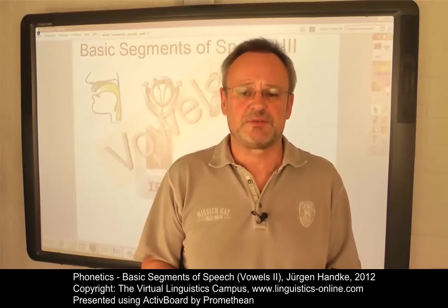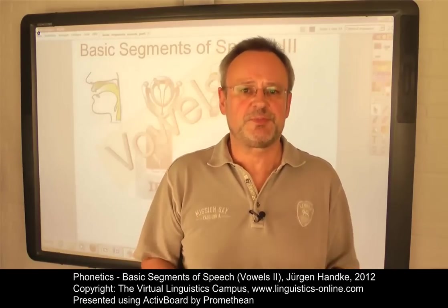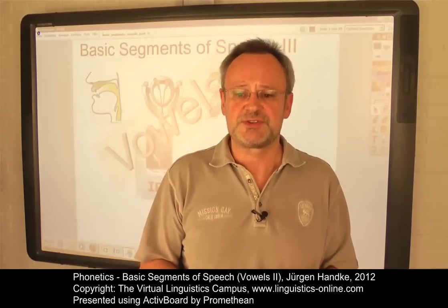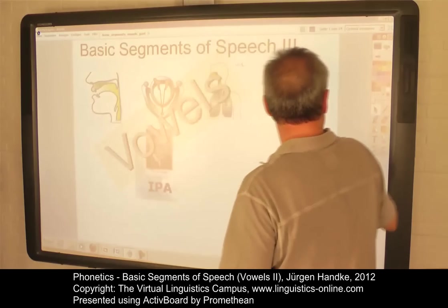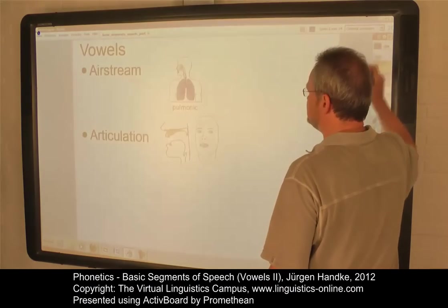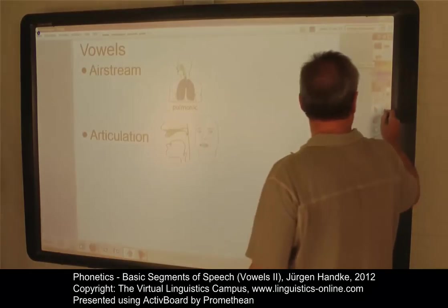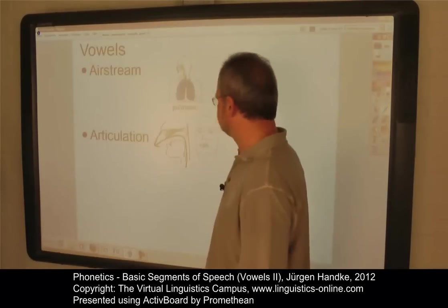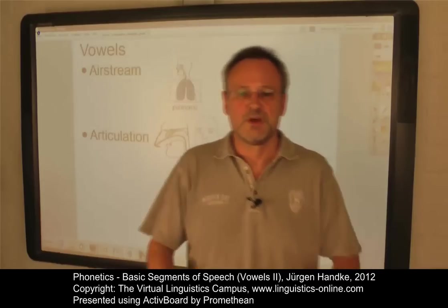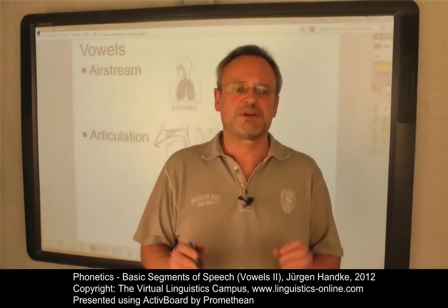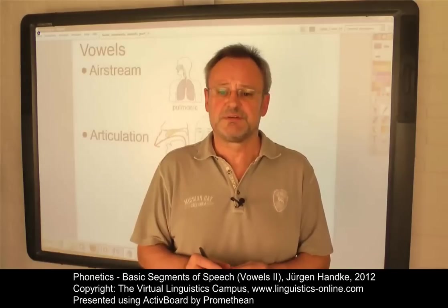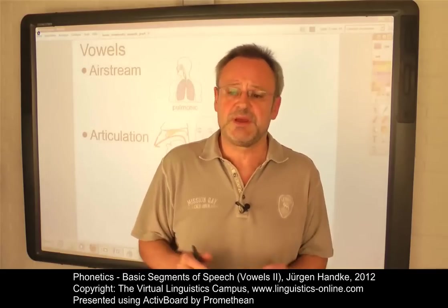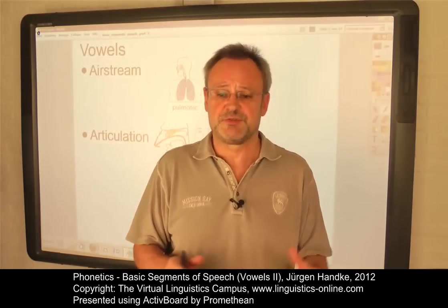In our first e-lecture about vowels, we discussed the general principles involved in the articulation of vowels and the main phonetic parameters of their description. We defined vowels as speech sounds that involve pulmonic air and a free air passage through the vocal tract. We showed how the cardinal vowel chart can be constructed as a reference system for the articulatory description of vowels, and we looked at the main parameters used for the classification of vowels.